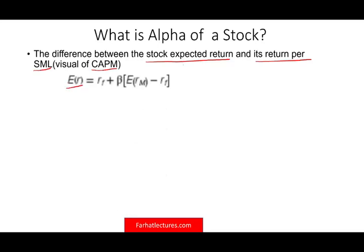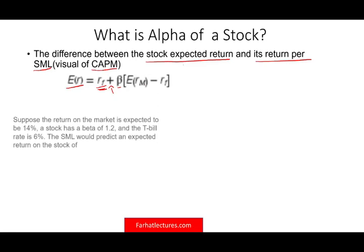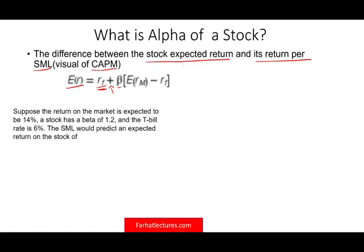And what's that formula? The expected return equal to the risk-free rate plus the beta times the expected return on the market minus the risk-free rate. The best way to illustrate this is to work an example to show you how it works.